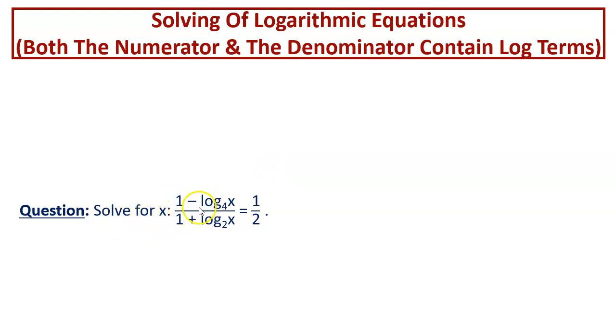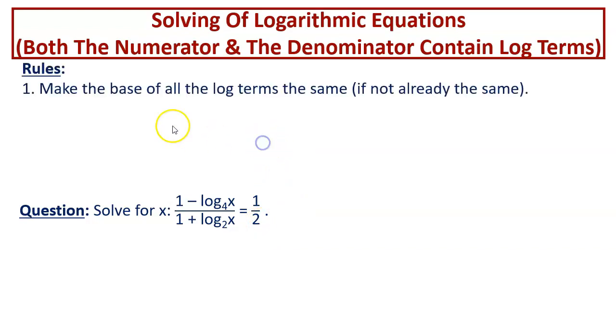Solve for x: 1 minus log of x to the base 4 over 1 plus log of x to the base 2 equal to half. Now let us go to the rules part. The first rule says, make the base of all the log terms the same if not already the same.